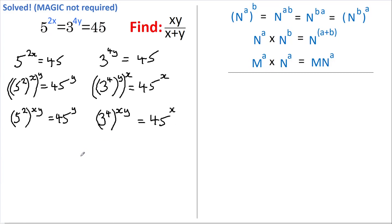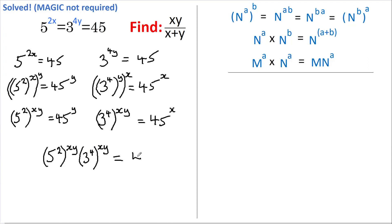Now I'm going to merge these two equations by multiplying the left-hand side of each equation together and the right-hand side of each equation together. So we get 5 squared to the power of xy, multiplied by 3 to the power of 4 multiplied by xy, and this equals 45 to the power of y multiplied by 45 to the power of x.